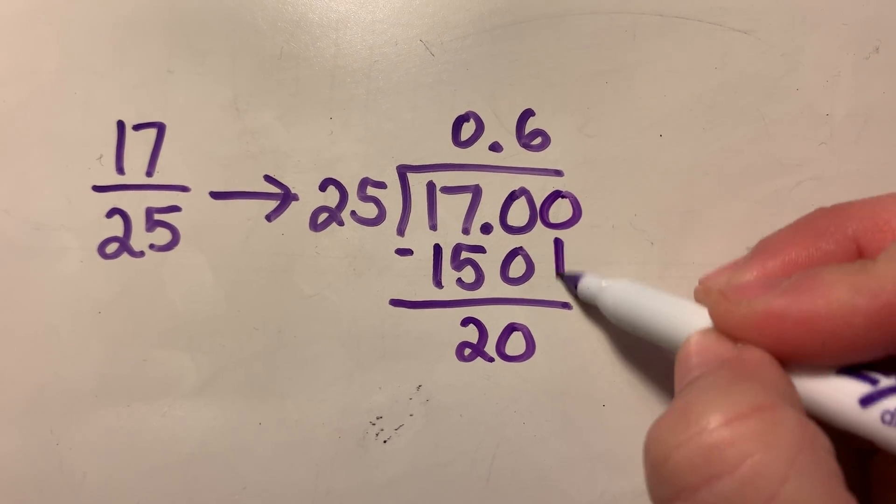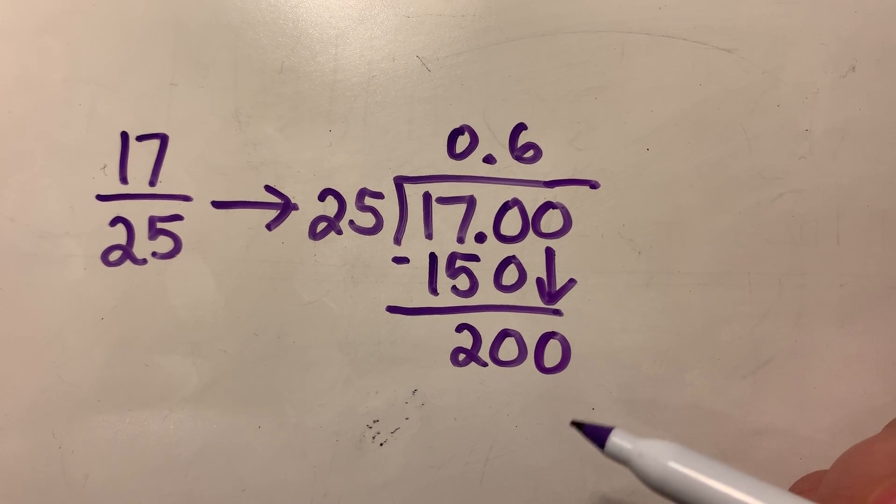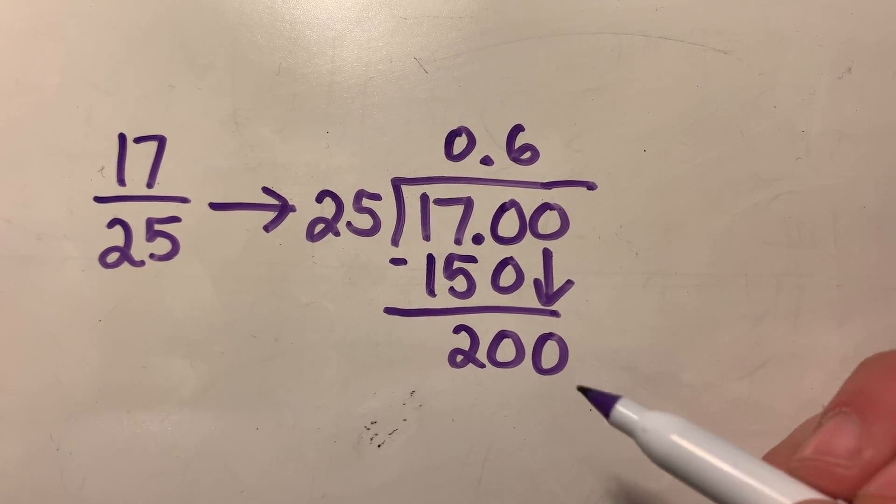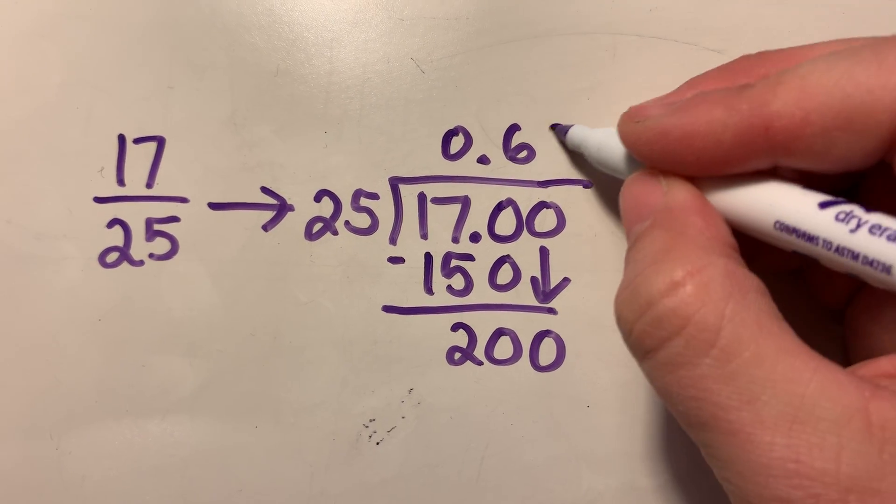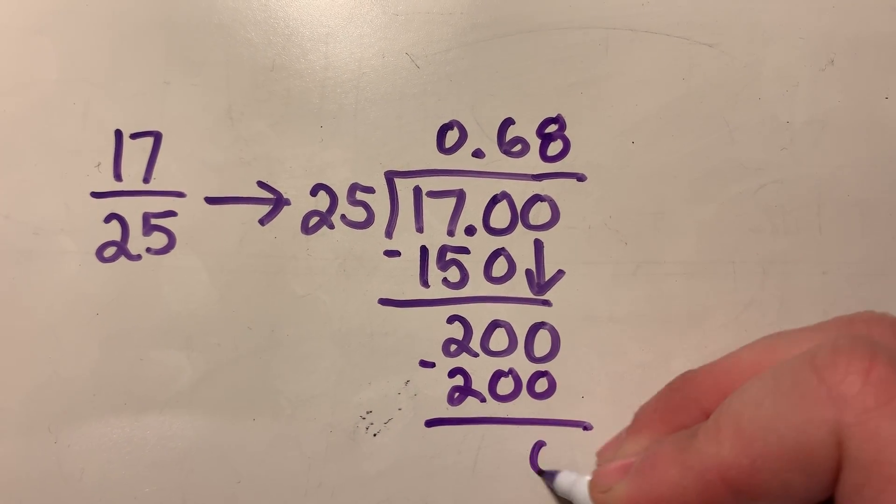So I'm going to subtract. I have a remainder, but I'm going to drop a zero down. So 25 goes into 200. If you think about it, there are four quarters in a dollar. That means there's eight quarters in $2, which means 25 goes into 208 times perfectly.